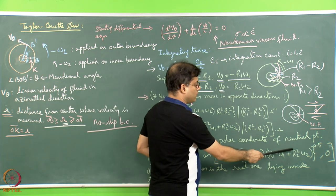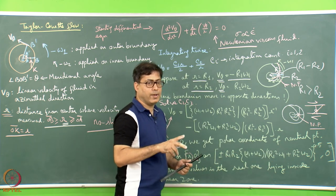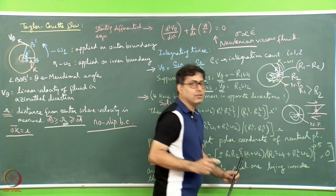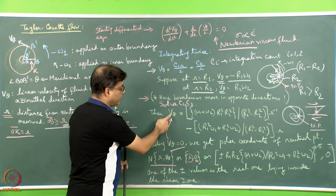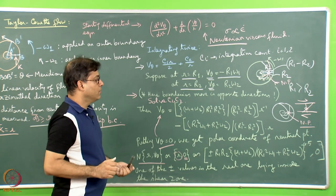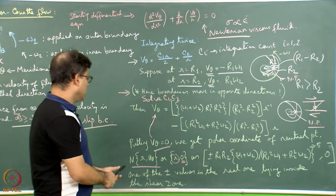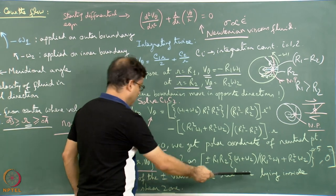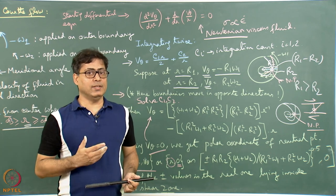To find the neutral point coordinates (r, 0), we set V theta = 0 in the velocity profile equation and solve for r, giving: r = ± r1·r2·sqrt[(omega1 + omega2) / (r1²·omega1 + r2²·omega2)], with theta = 0. Since two values of r (plus and minus) are mathematically possible, we must choose the single value that lies inside the shear zone.